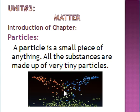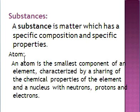Kuch cheezein aisi hoti hai jin ke particles bahut chhote hote hai — to hum unke particles ko nahi dekh sakte. Jo aise particles hote hai, kuch substances jo hote hai woh bahut tiny particles se made up hote hai jo ke humari aankhon ko nazar nahi aate. Woh particles kya kehlate hai? Woh particles atoms ya molecules kehlate hai. Kuch cheezein ke particles humein nazar aa jate hai aur kuch ke particles humein nazar nahi aate.